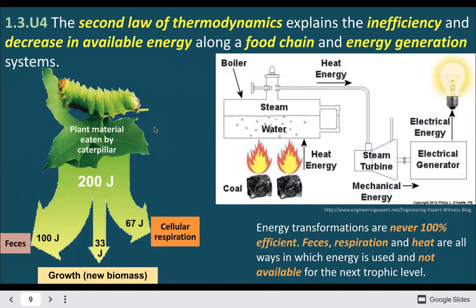The second law of thermodynamics is really about inefficiency — no system is going to be completely efficient, you're always going to lose some energy in some way. A plant uses a lot of energy in respiration before a caterpillar can even eat it, and then once the caterpillar eats it, some of that plant energy is used for respiration and some is just wasted. With electricity generation, we generate heat to turn turbines, but some of that heat goes off into the environment — you can't perfectly insulate anything, so you're always going to waste some energy.